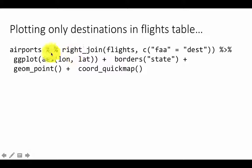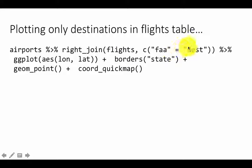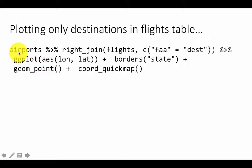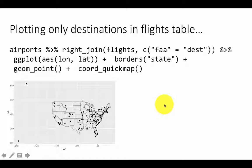We are only interested in the destinations which actually occur in the flights table. You can easily do that: I am saying `airports %>% right_join(flights, by = c('faa' = 'destination'))`. I want to include results only for those which are in the flights table. In fact, I could have just done an inner join, because we are saying we are only interested in the matches. Then doing the same ggplot as before — so you get only those destinations which occur in the flights table.